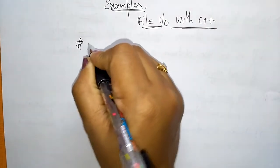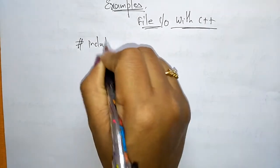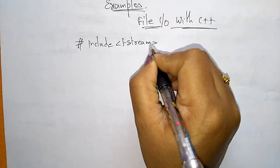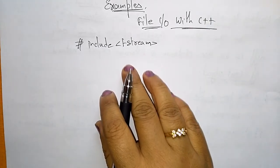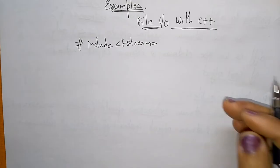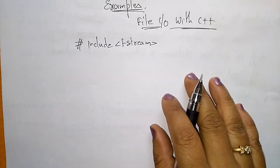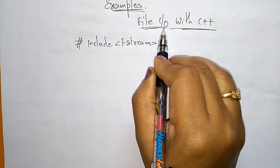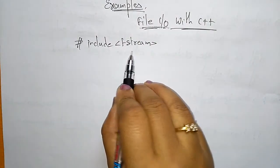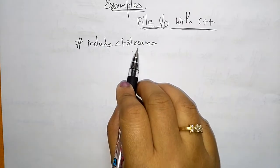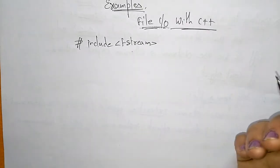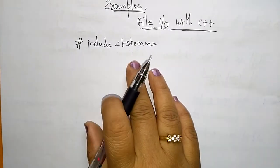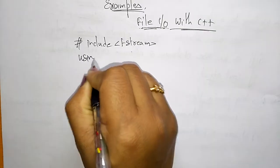Hash include fstream. Up to now we had used only iostream. iostream means the standard input/output functions will be present in iostream. If we are using the file system, then we have to use fstream. fstream contains the ifstream and ofstream, meaning the input functions and the output functions that will be included in fstream.